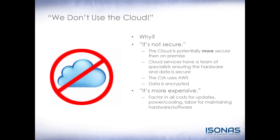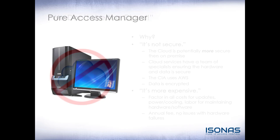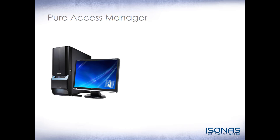Some people will say it's more expensive — that they could just buy a small server, run the software, and call it good. But once you factor in all costs including updates, power, cooling, and labor for maintaining the server and software, it really becomes an expensive proposition over the long term. With Pure Access Cloud, there's an annual fee you can roll into service contracts to ensure the end user has no issues with hardware failures. If a customer absolutely cannot put their data in the cloud due to regulations, we can load Pure Access Manager on site — it is the exact same application as Pure Access Cloud, just running inside the customer's network rather than on the internet and Amazon Web Services.